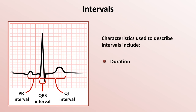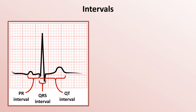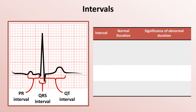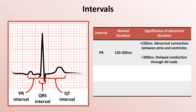As already mentioned, intervals are only described based on duration, so it would make no sense to describe an EKG as showing depression of the QT interval. It is critical to basic EKG interpretation to know the normal ranges of these intervals. The normal PR interval is 120 to 200 ms. As the PR interval represents the normal delay in conduction within the AV node, a PR interval shorter than 120 ms implies an abnormal electrical conduction between the atria and ventricles which can bypass the AV node. An interval greater than 200 ms implies delayed conduction through the AV node, usually caused by either age-related degeneration of the node, medications such as beta blockers and calcium channel blockers, or excessive input from the vagus nerve.